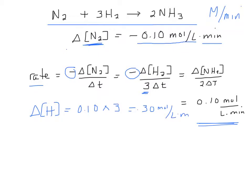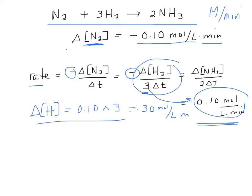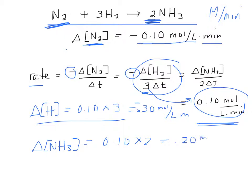And it's automatically going to be negative because it's a reactant and it's being used up. At what rate is the ammonia, the NH3, appearing? That appears twice as fast as the nitrogen is disappearing. So the change in concentration of ammonia is just going to be 0.10 times 2, or 0.20 moles per liter per minute.